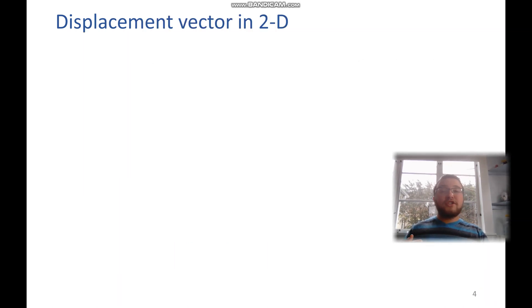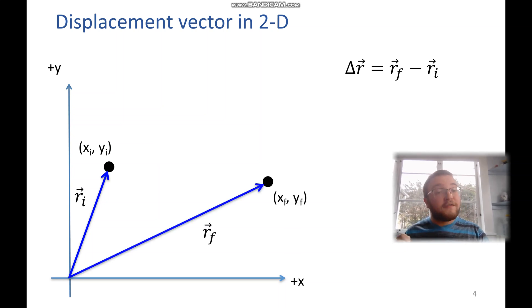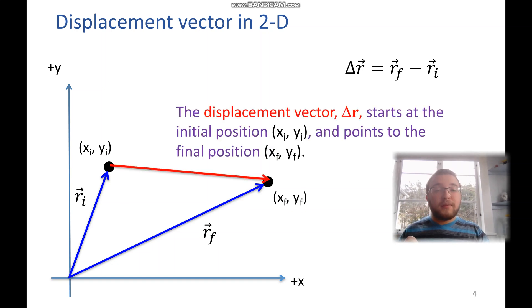So in two dimensions, we sometimes like to look at how this can be graphed. So we start with delta r, which is our two-dimensional displacement vector. So we have our graph here. We have our initial point and our initial position vector. Our final position and our final position vector. Our displacement vector starts from the initial position and points to the final position.